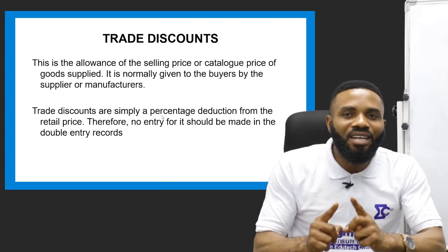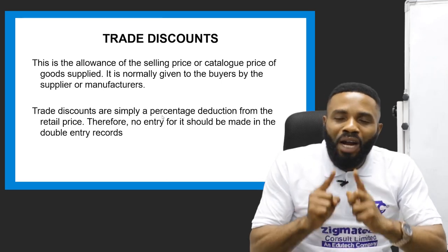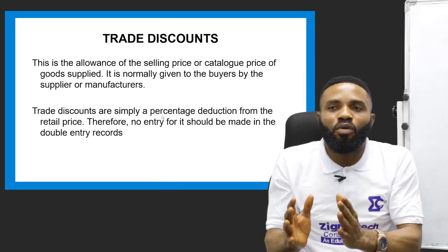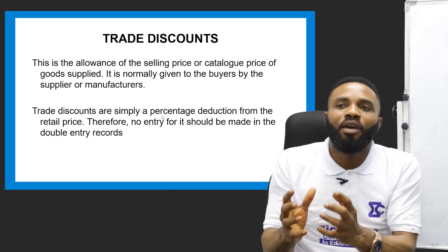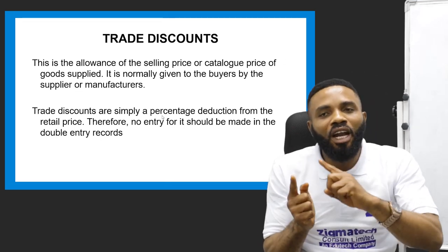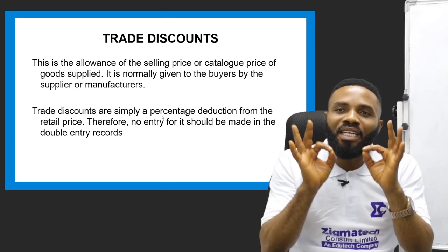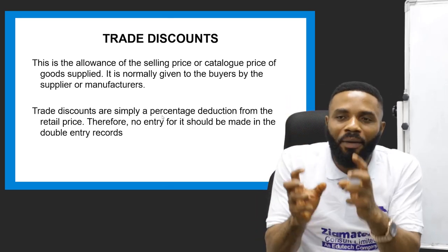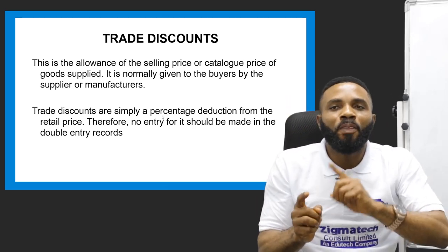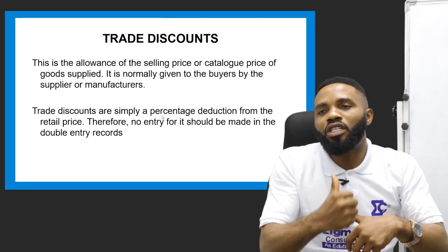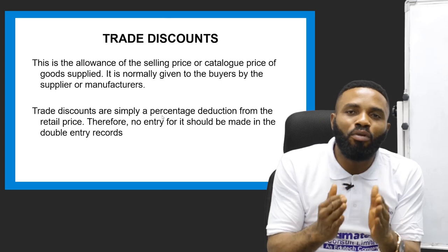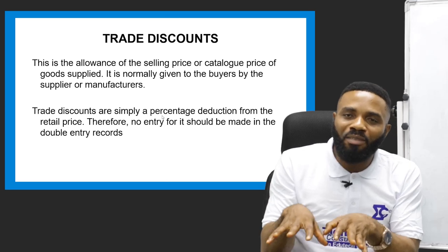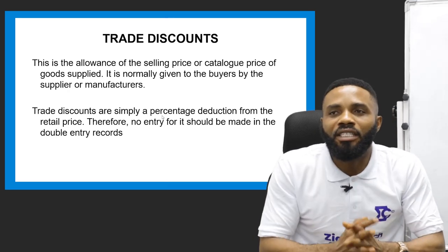The double entry record is a secondary need — the primary need is to prepare the sales day book and ascertain the total value realized from sales. When doing the posting, the discount is not needed; only the total amount is posted to the customer's account and to your own account. However, within the sales day book itself, there is a place for trade discount.